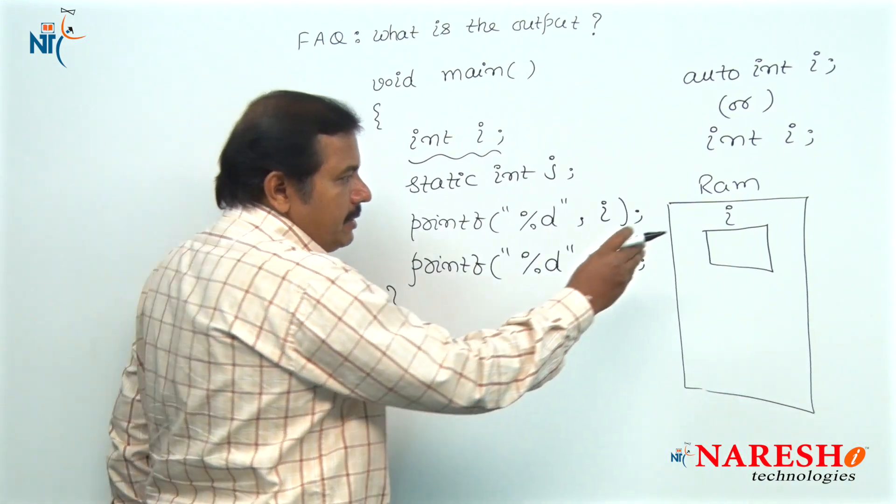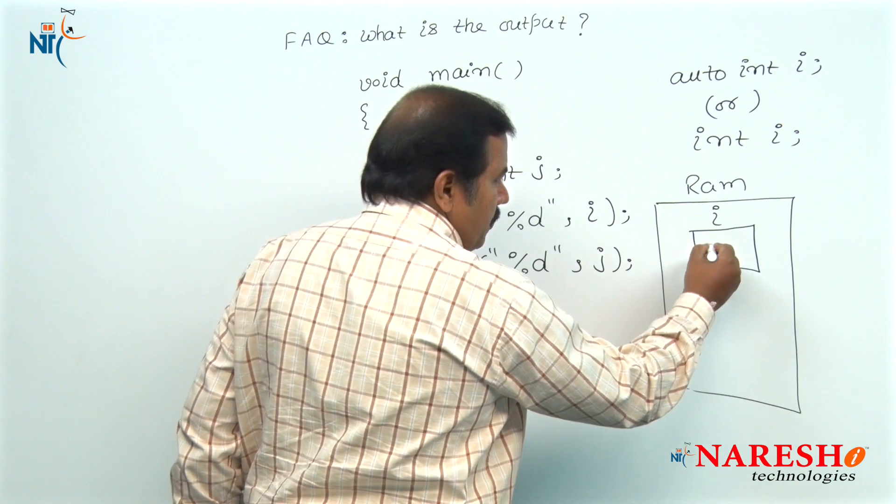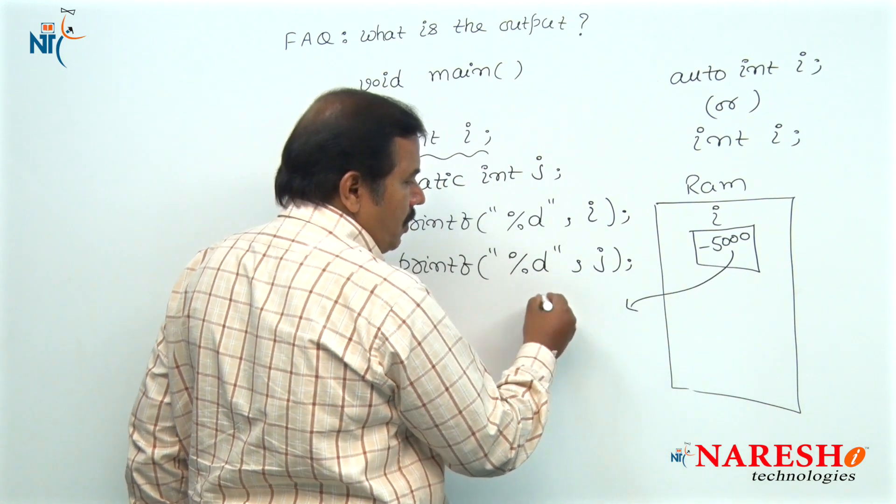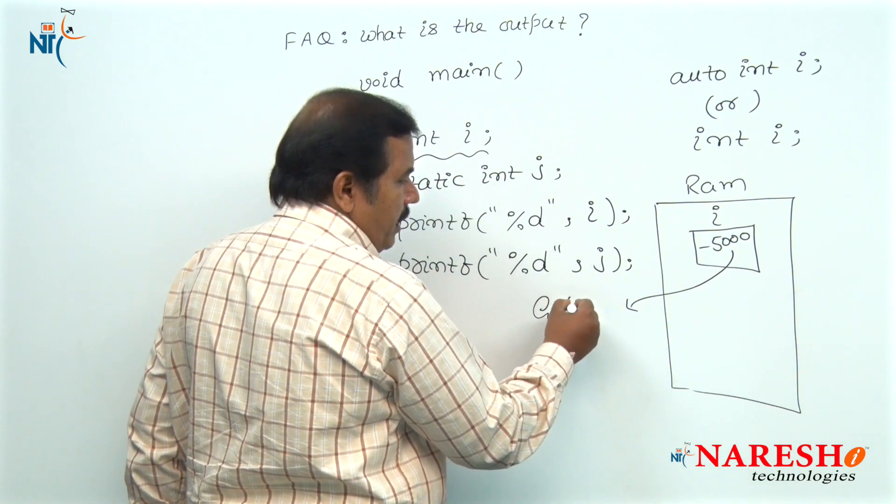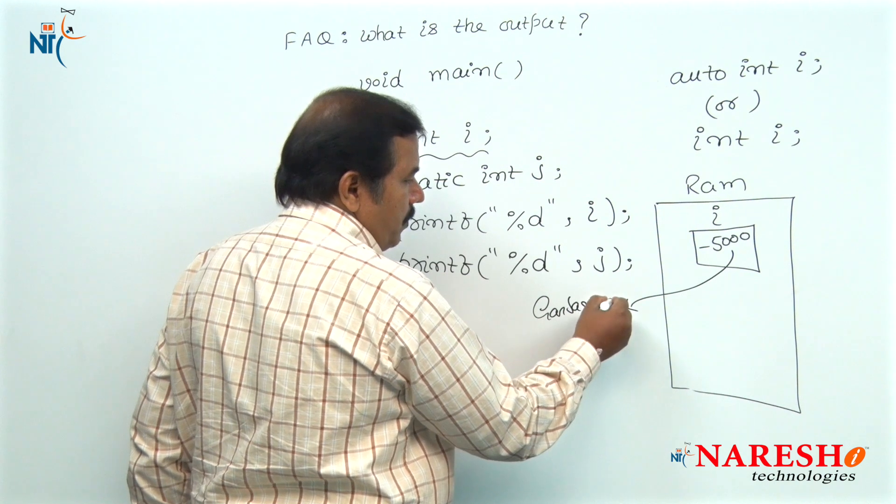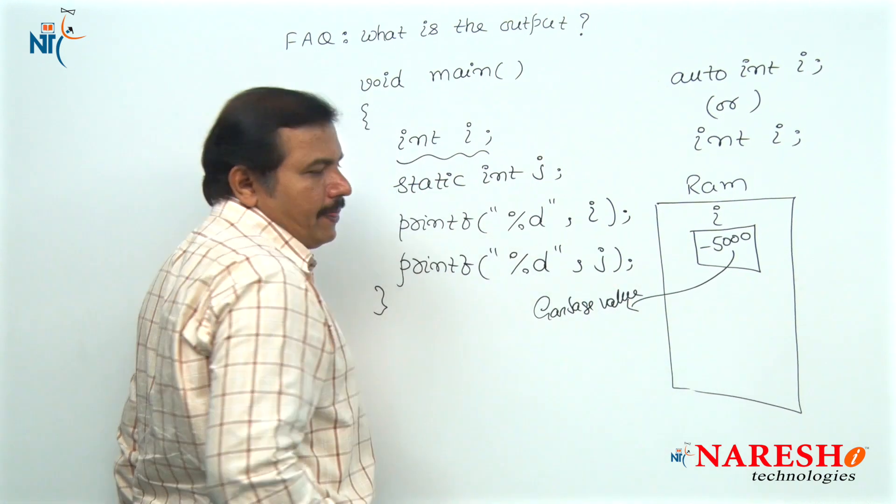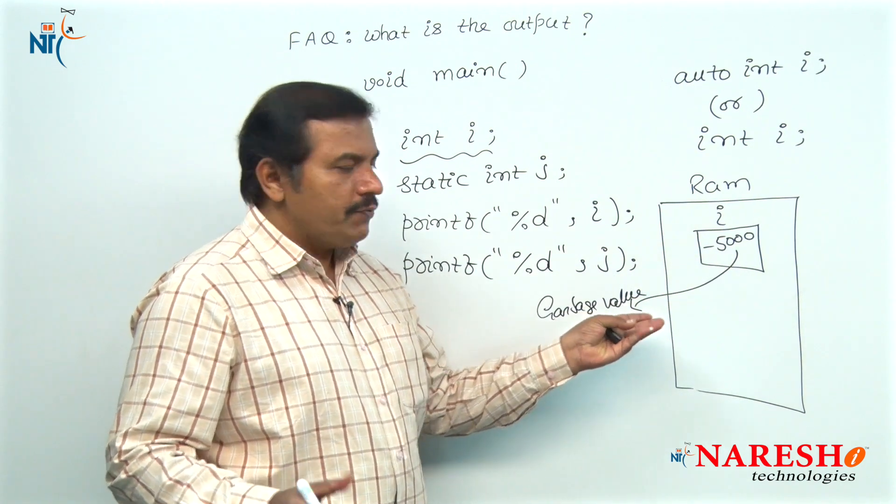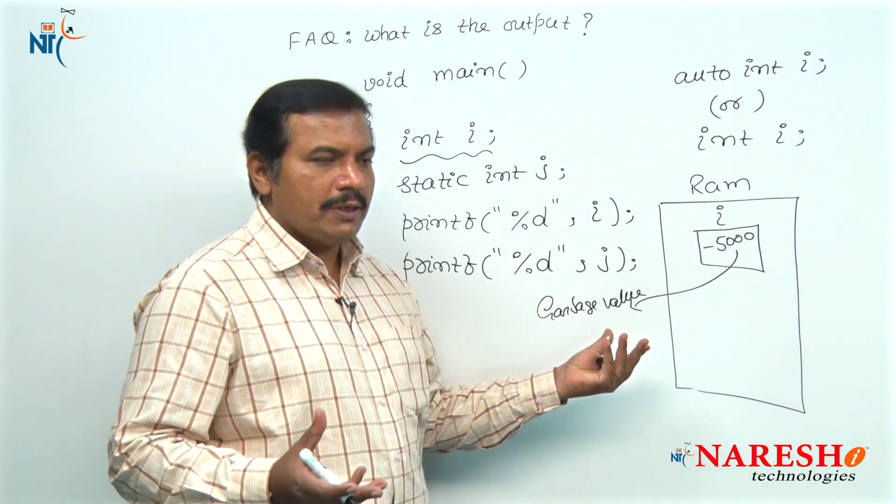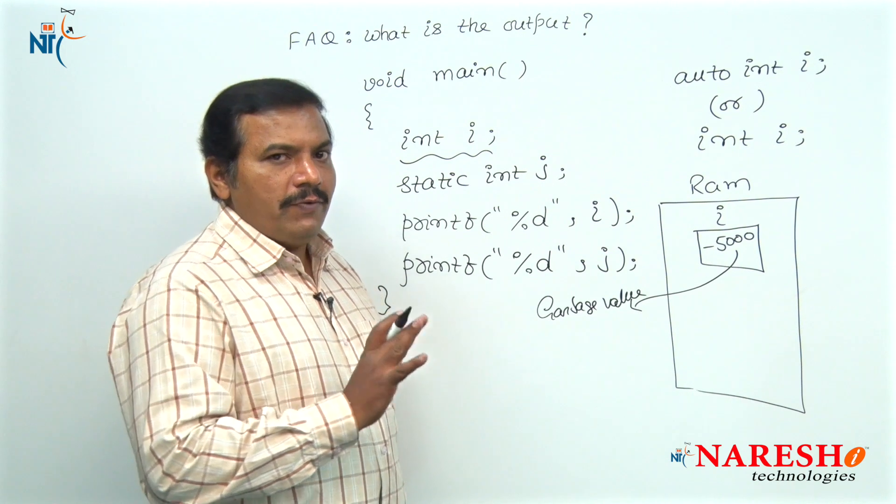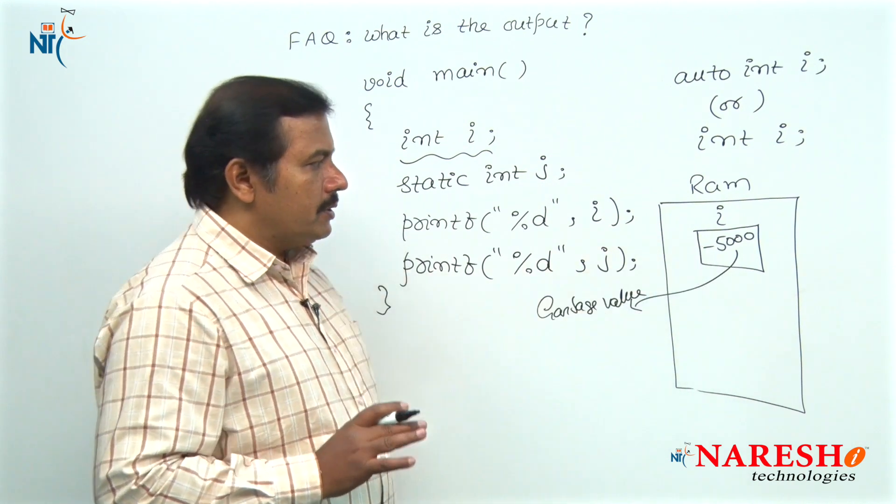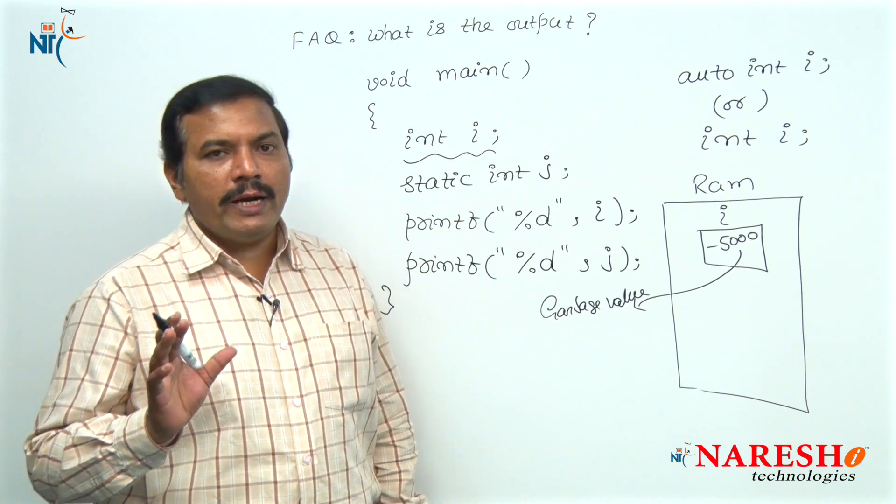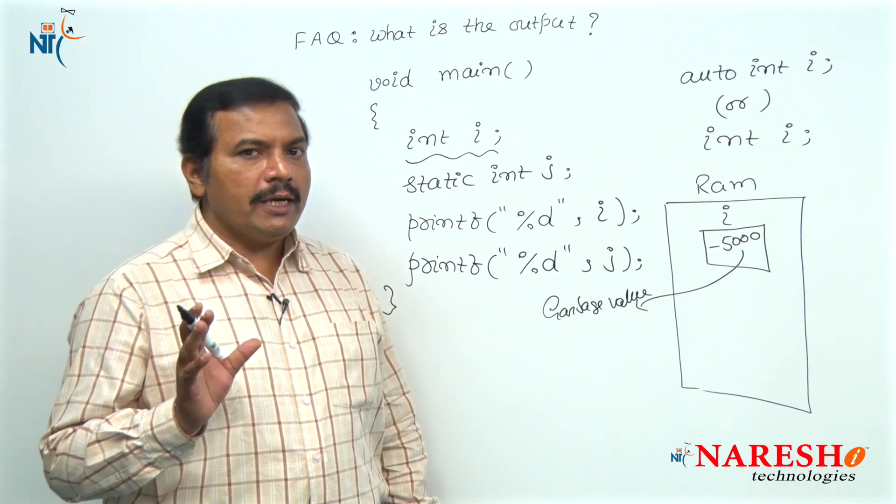Inside this memory location, the default value stored is an unpredictable value called a garbage value or junk value. It could be 5000 or minus 5000, sometimes 0, sometimes 10,000. Some value will be stored by default. Hence, the default value held by automatic variables is a garbage value.